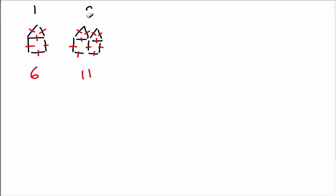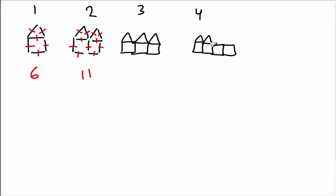For the third one, I'm going to start drawing them just like squares instead of separate matchsticks. We've got three squares, three triangles on the top. And then the fourth one, which we didn't see yet, is going to have four squares and four triangles on the top. It's important to count carefully — maybe tick off each side so you don't recount something twice.